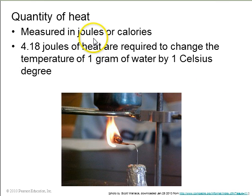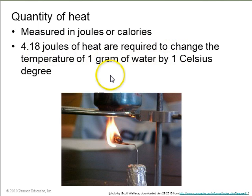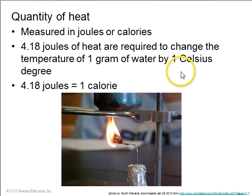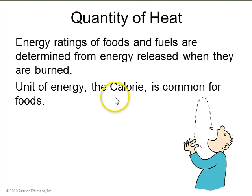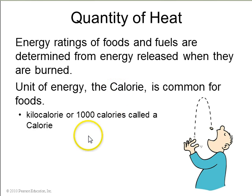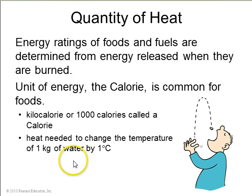Heat can be measured in joules since it's a form of energy. We also use the unit calorie — it turns out 4.18 joules of heat are required to change the temperature of one gram of water by one Celsius degree, and we call that one calorie with a lowercase c, sometimes measured by burning a peanut. Energy ratings from foods and fuels are determined by burning that food and measuring how much energy is released. A subtly different unit is the calorie with a capital C, sometimes called the kilocalorie — it's a thousand lowercase calories, the amount of heat needed to change the temperature of one kilogram of water by one Celsius degree.